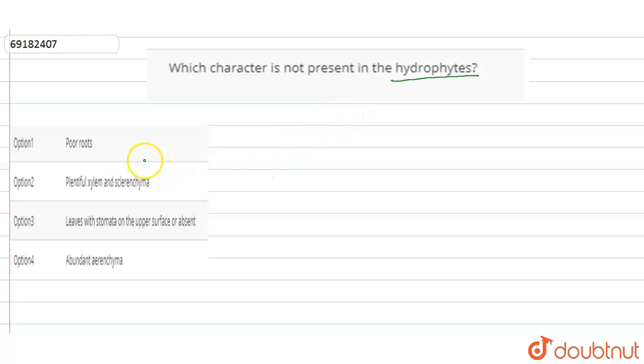There are poor roots, this character is not present in them. Plentiful xylems, leaves with stomata on the upper surface, and abundant aerenchyma.